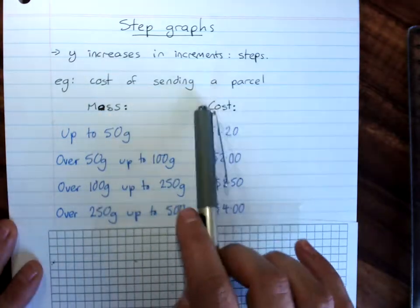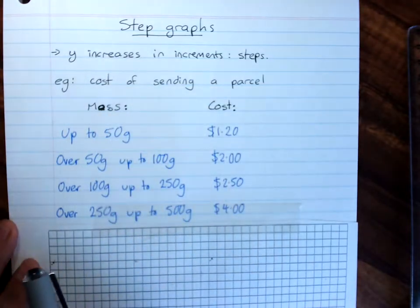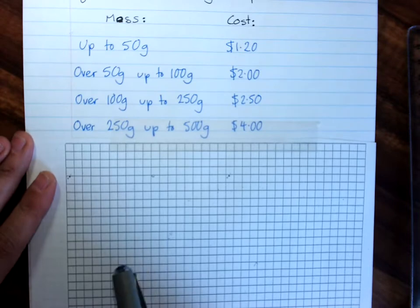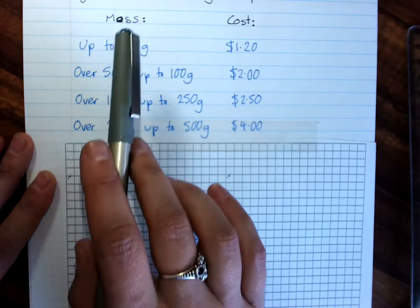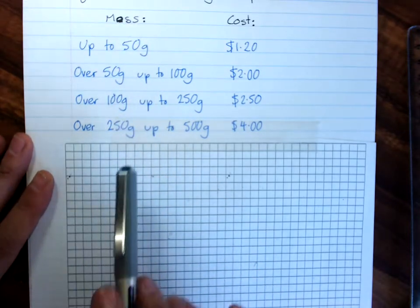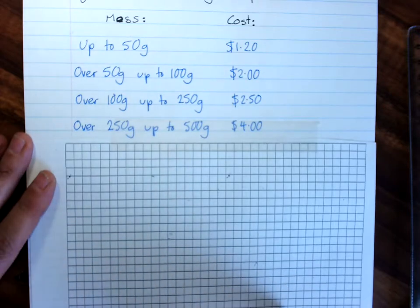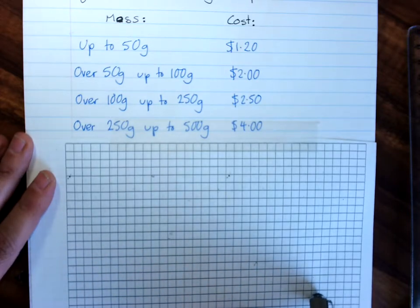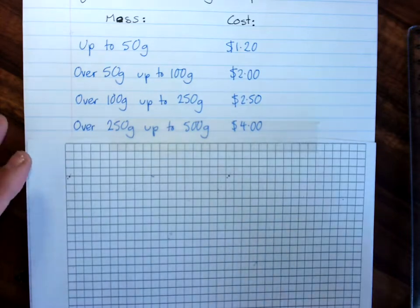Obviously the cost of sending my parcel depends on its weight or its mass. So, we need to graph a mass of up to 500 grams on the x-axis, and on the y-axis a cost of up to $4.